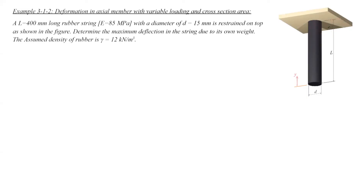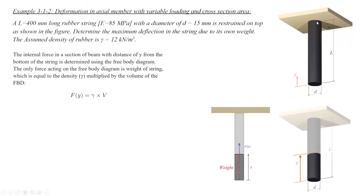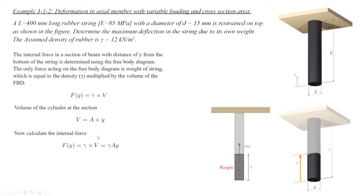There is no given equation for the internal force, so we need to derive it using the free body diagram. I'm going to cut this rubber string at an arbitrary point with distance y from the bottom part, and put a known force at the cut section, which I'll call Fy. This Fy is developed to keep that free body part in equilibrium. The other force acting on the free body is the weight of that part. The weight equals the density of the string multiplied by its volume — volume of the cylinder is area multiplied by height y. Plugging that volume back gives us the force in terms of variable y.